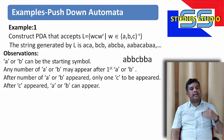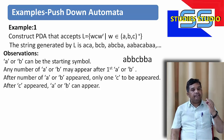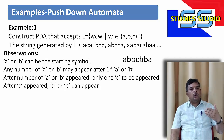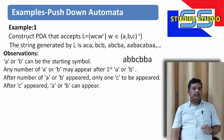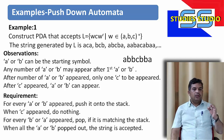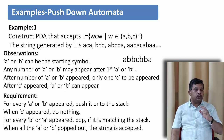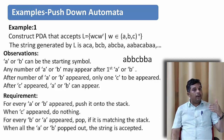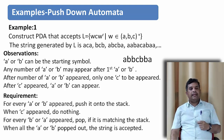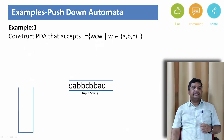The first symbol will be either a or b, and after that we can have any number of a's or b's. After having any number of a's or b's we'll have c, and after c we'll have a string of a's or b's. The requirements: for every a or b appearing in string W, we are going to push it onto the stack. When c appears we are not going to do anything. After that, for every b or a that appears, we will be popping if it matches the stack. When all the symbols are popped out, the string will be accepted. The example string we've taken is a b b c b b a.